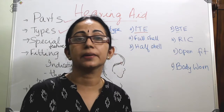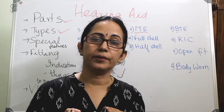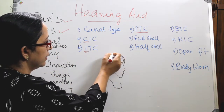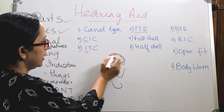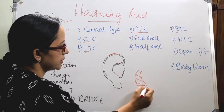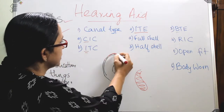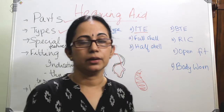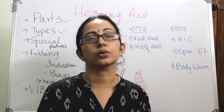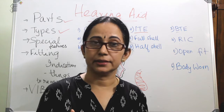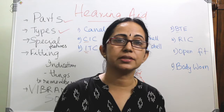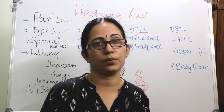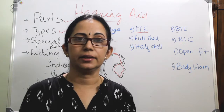BTE (behind the ear) has the microphone, amplifier, speaker, and battery unit in a single piece hooked on the helix, connected to the ear canal via a small wire or plastic tube. It is appropriate for all ages and all types of hearing loss. It is larger than canal types but easier to manipulate. The main disadvantage is that it picks up wind noise.